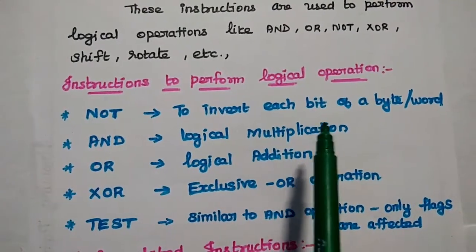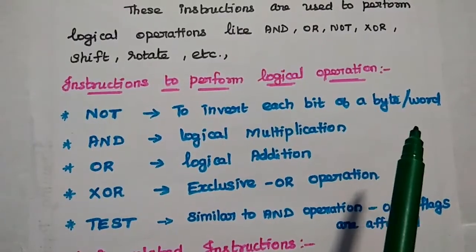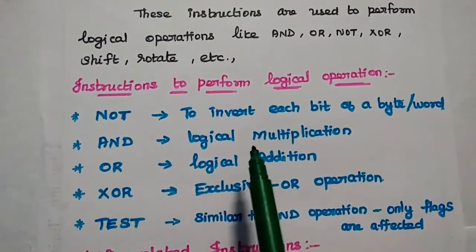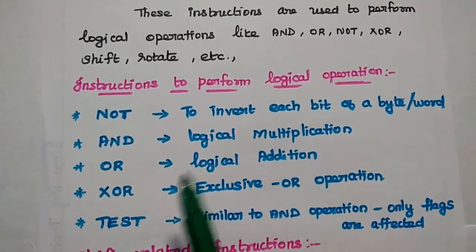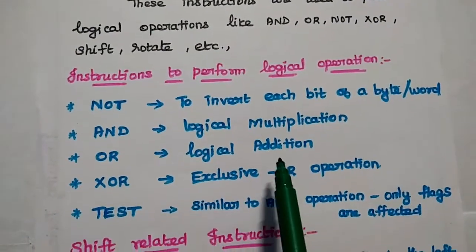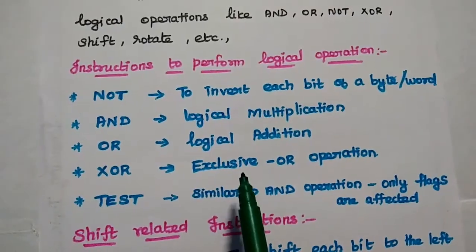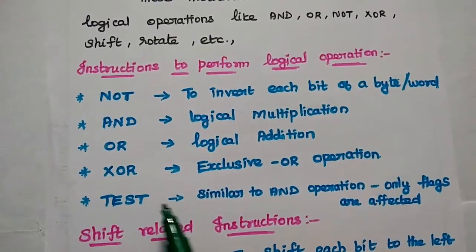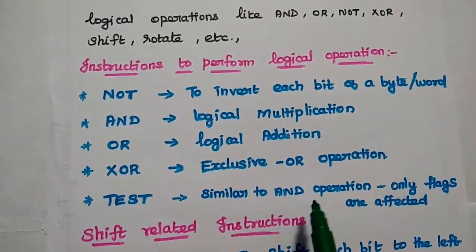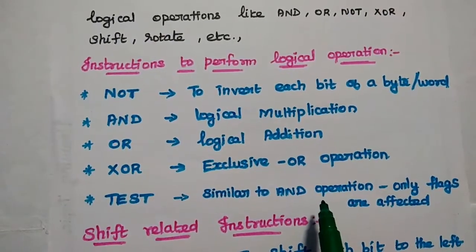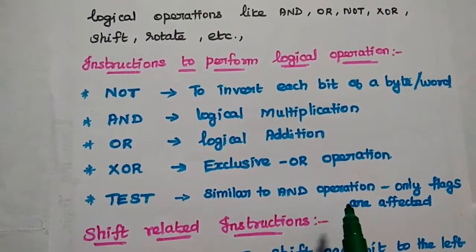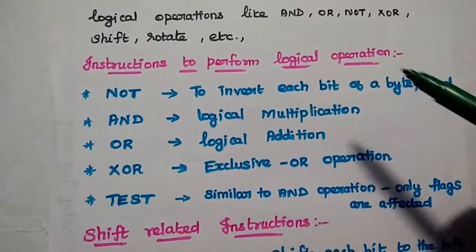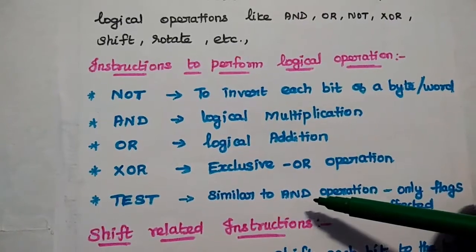NOT means to invert each bit of a byte or word given in that instruction. AND means to perform logical multiplication operation. OR means logical addition. XOR means exclusive-OR operation. TEST is similar to AND operation — the only difference is that the flags are affected, not the accumulator value. In AND, the result A = A AND B is stored in the A register, but in TEST, the register is not affected — only the flags are affected for testing purposes.